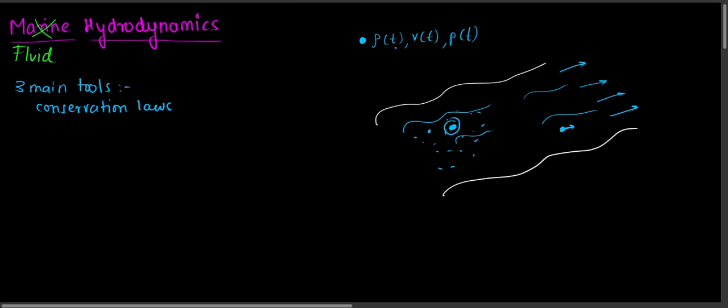Instead of one particle, I can take a zillion particles — all the particles around here — and try to analyze them to find a pattern of what the particles are following, then come out with certain equations. But as you can see, this task is almost impossible for a human to do.